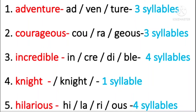Adventure — three syllables. Courageous — three syllables. Incredible — four syllables. Night — only one syllable.